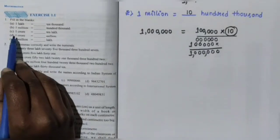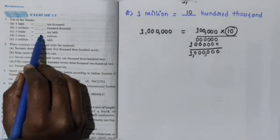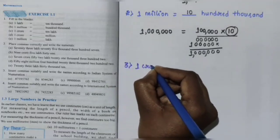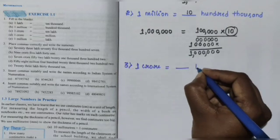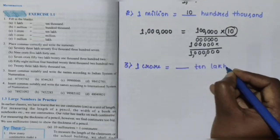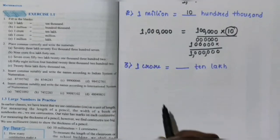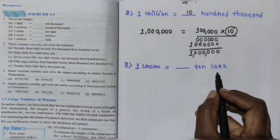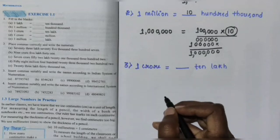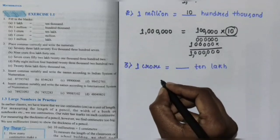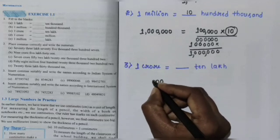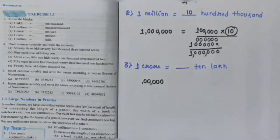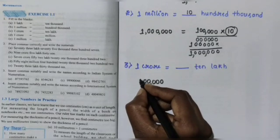Next, question number 3: 1 crore is equal to dash 10,000,000. Using the Indian system of numeration, first you write 1 crore in numbers: unit, 10, 100, 1,000, 10,000, 1 lakh, 10 lakh, 1 crore.